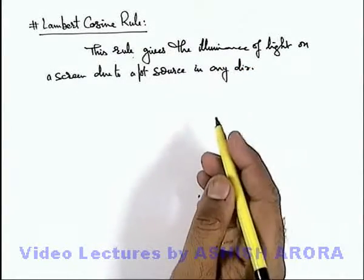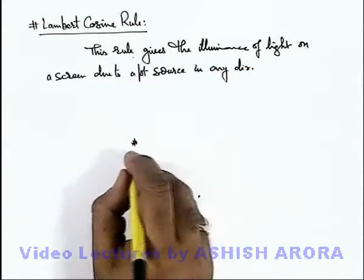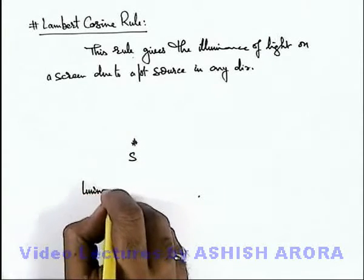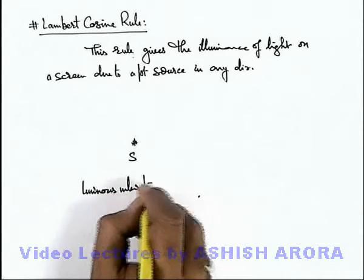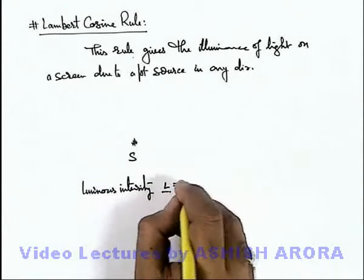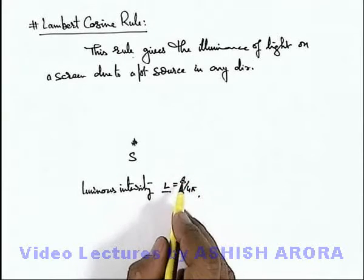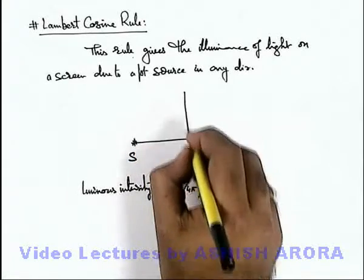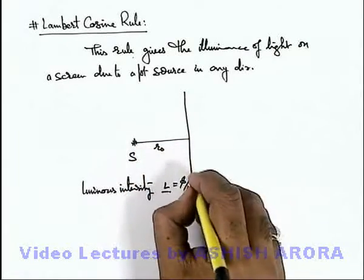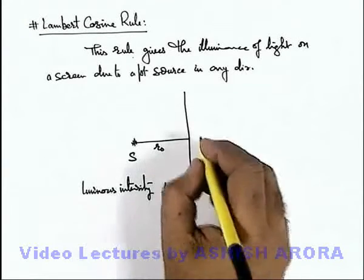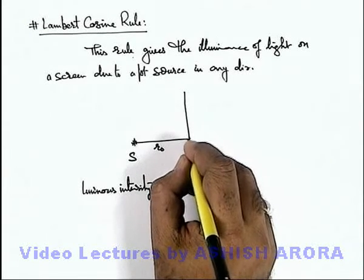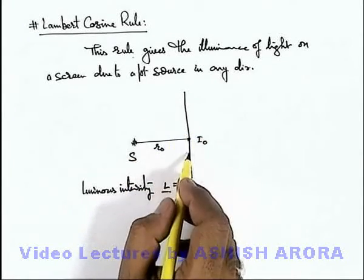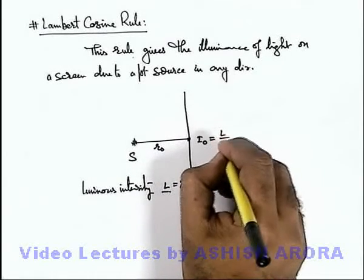This is the same mathematical expression we used in the previous section. If there is a source S having its luminous intensity L in all directions, which we can write as φ/4π, where φ is the luminous flux emitted uniformly in all directions, then at a distance r₀ with a screen normally placed, the illuminance at the point directly normal to the source is given by L/r₀².